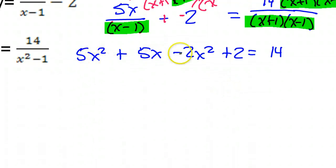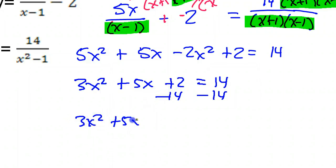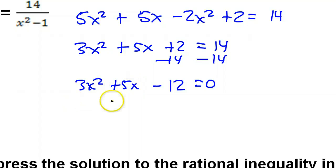Now, like terms, 5x squared minus 2x squared, that's 3x squared. Okay? That was it. So, I've got plus 5x plus 2 is equal to 14. Let's subtract. So, that's 3x squared plus 5x minus 12. Alright, let's see if this factors. If it doesn't factor, we will have to use the quadratic formula. But, let's try factoring first.